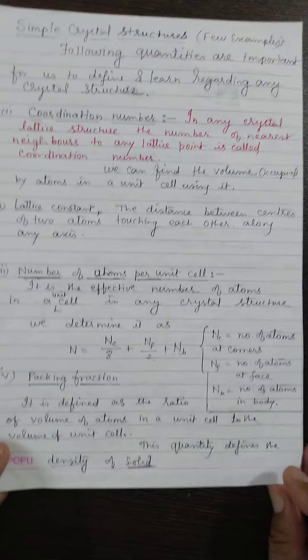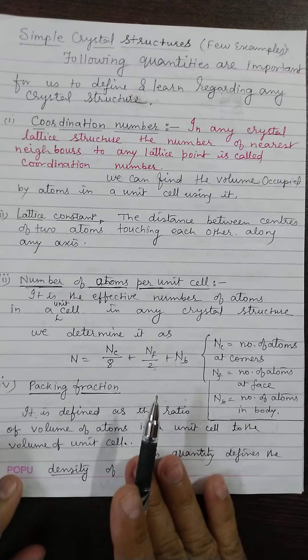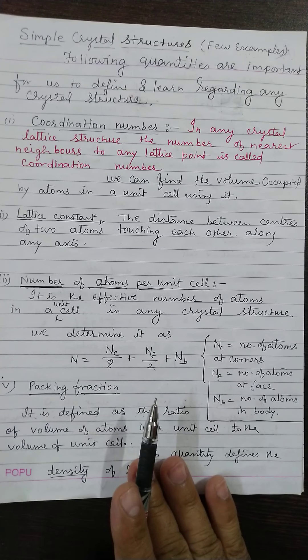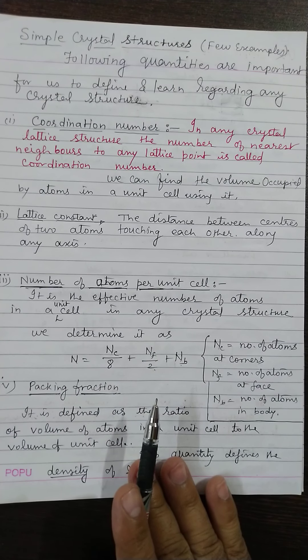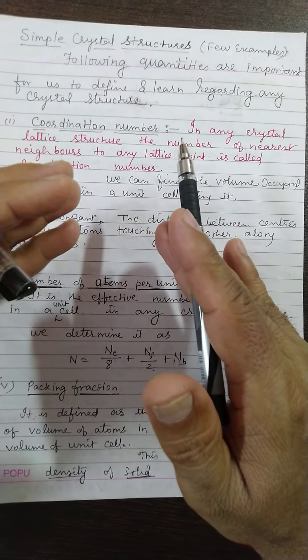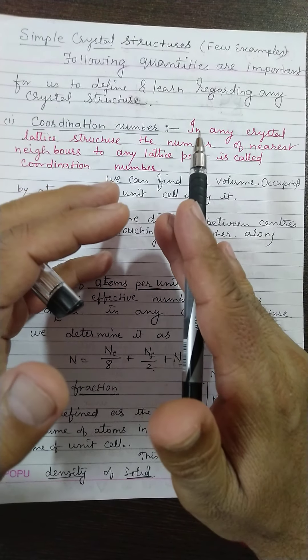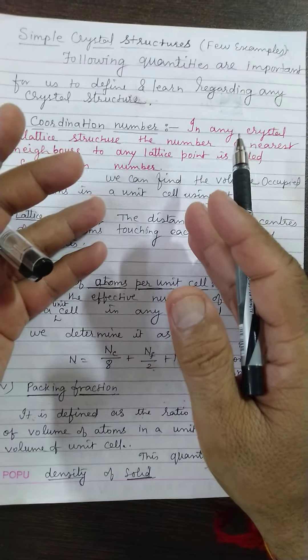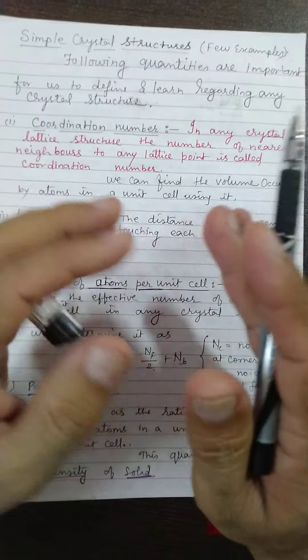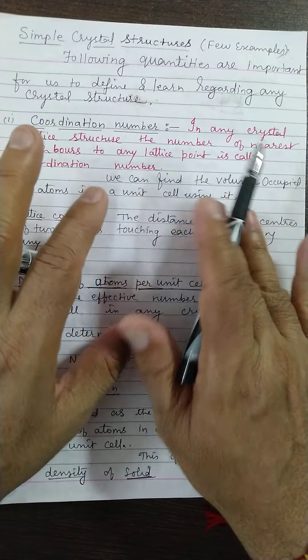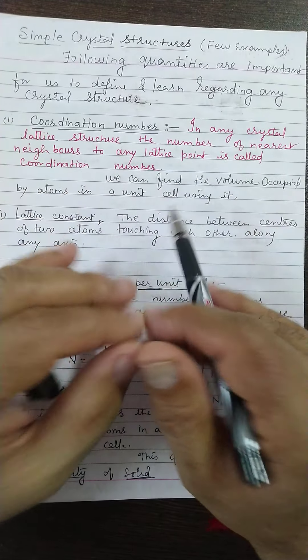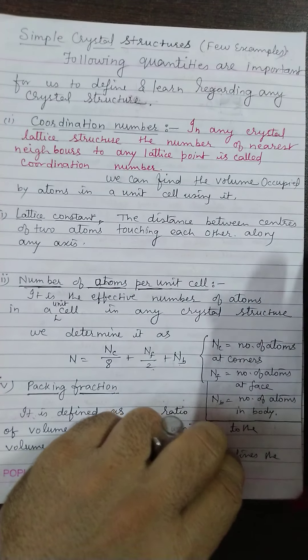Then we defined packing fraction. Remember, packing fraction is a parameter which gives a direct idea about the density of the substance because it is simply the ratio of the actual volume occupied by the atoms in a unit cell and the volume of the unit cell. This ratio gives an idea about density.